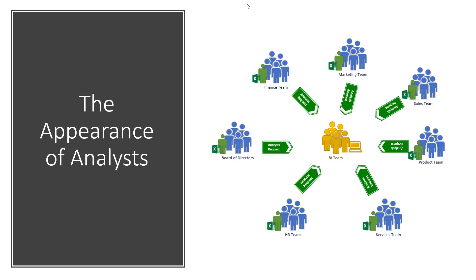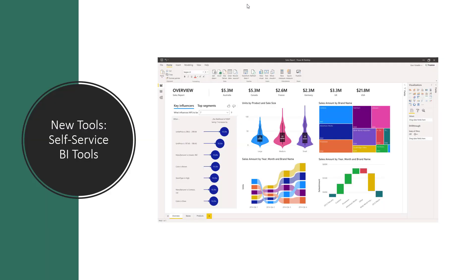One of the reasons the BI team was created was to reduce the need for that analyst in each team, since the BI team could answer all analytical questions. But it didn't really work out that way — the analytical questions were still there, and there was still a need for someone to answer them. So the analyst with Excel or spreadsheets in each team, who had a good business understanding, was responsible for answering those analytical questions. Excel wasn't a great tool, so many companies came up with new self-service analysis tools.